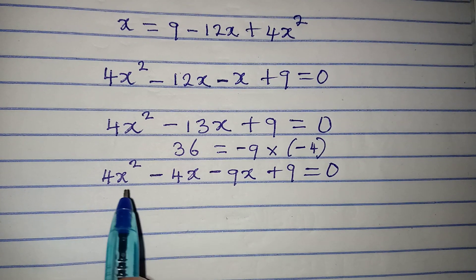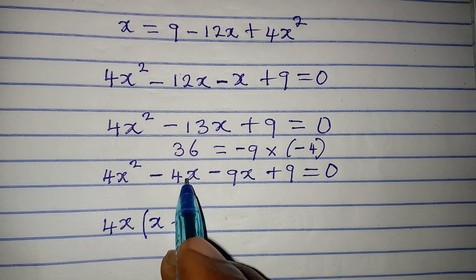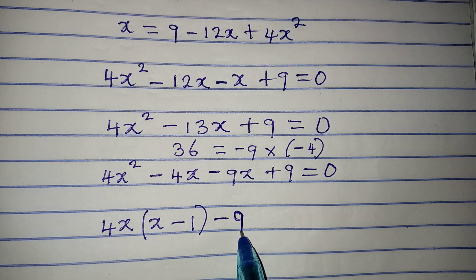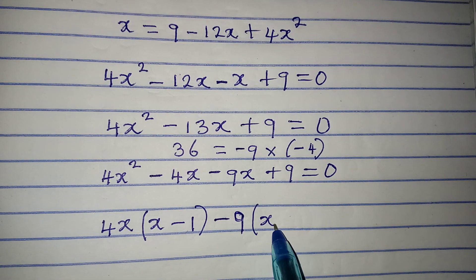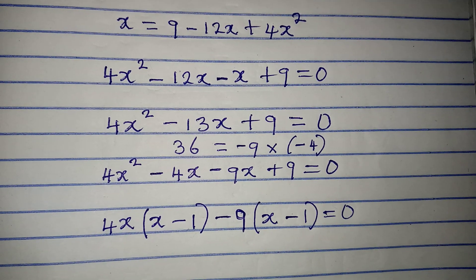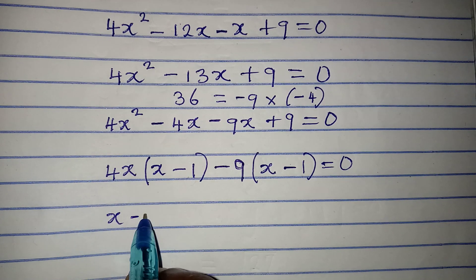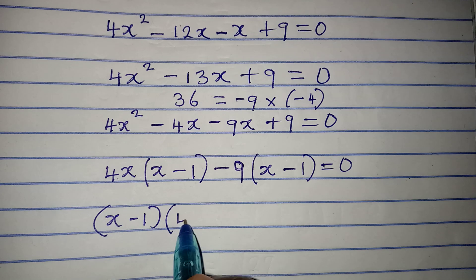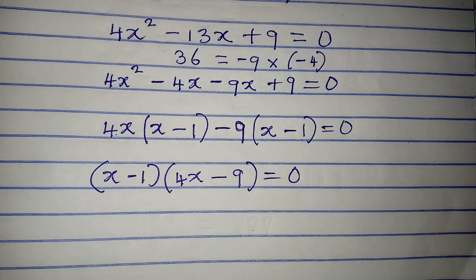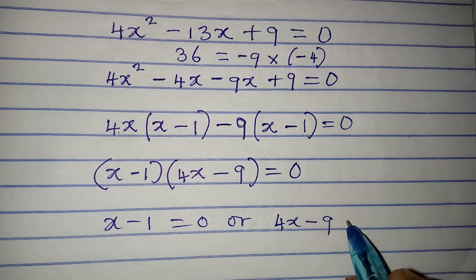We group into two pairs and factorize. From the first pair, 4x is common, giving 4x(x minus 1). From the second pair, the common factor is minus 9, giving minus 9(x minus 1), and this equals zero. So (x minus 1) is common to both, giving (x minus 1)(4x minus 9) equals zero.